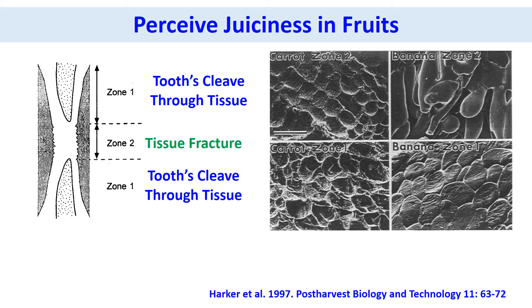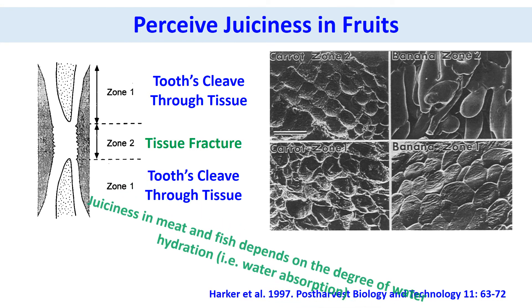In the microscopic views we can visualize cell rupture in the case of carrots and cell separation in the case of bananas. However, meat and fish don't release juice during consumption, and it is identified that the juiciness of meat and fish depends on the degree of hydrated water bound to the protein matrix.